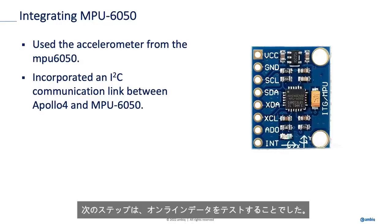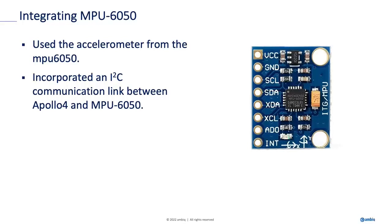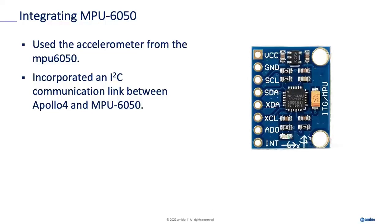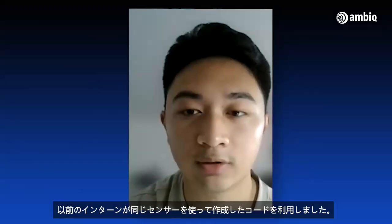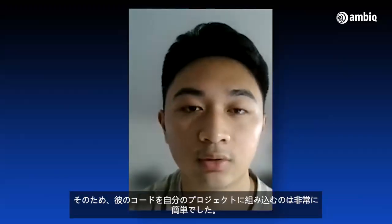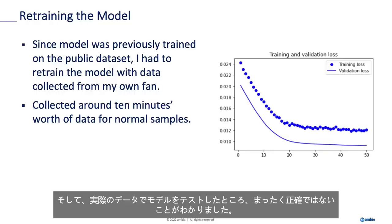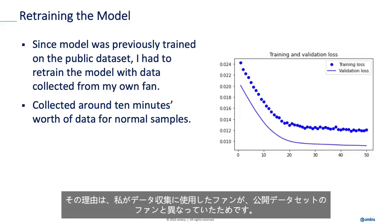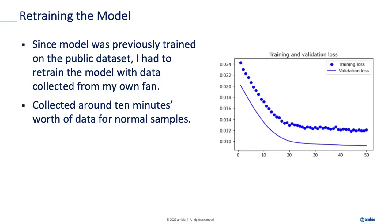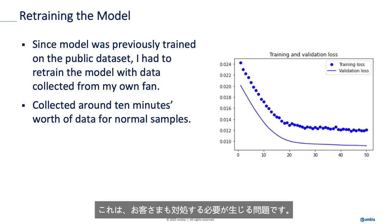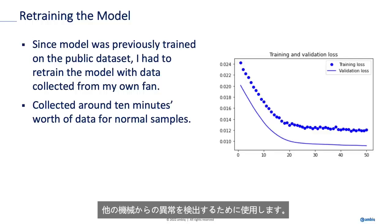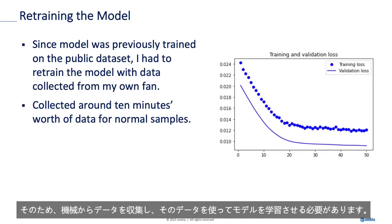The next step was to test it on live data. I used a sensor called the MPU6050, which contained an accelerometer. I collected data by incorporating an I2C communication link between the Apollo 4 and the MPU, using code that the previous intern, Rohan, had written — he was using the same sensor, so it was easy to incorporate. What I found was that after testing on live data, the model was completely inaccurate, because the fan I used was completely different from the one in the public dataset. This is something customers would face too — they'd need to collect data from their own machine and retrain the model.